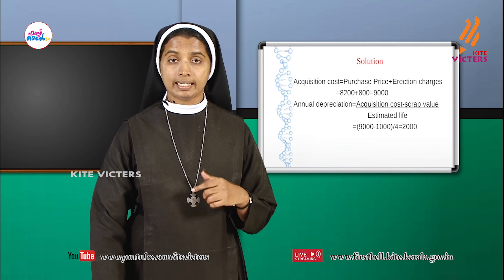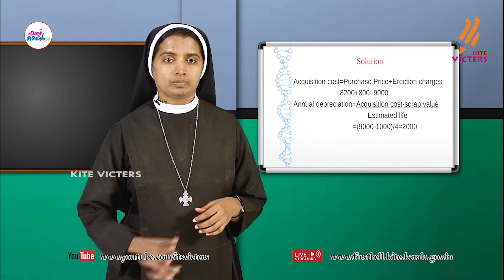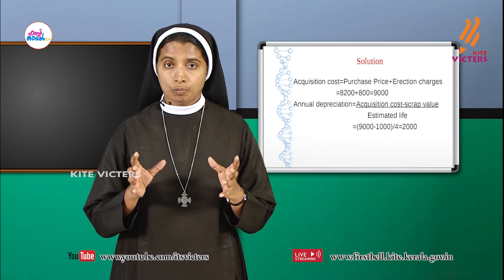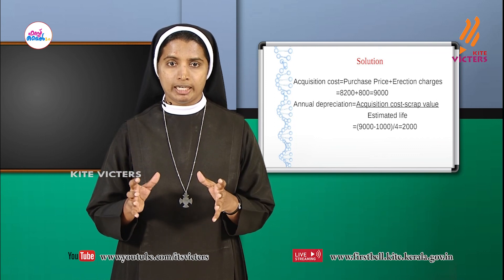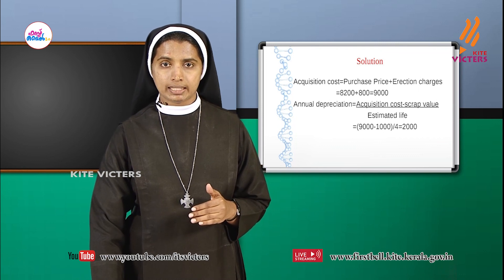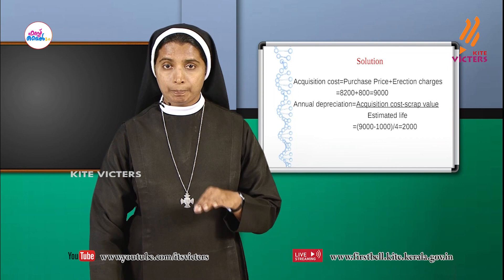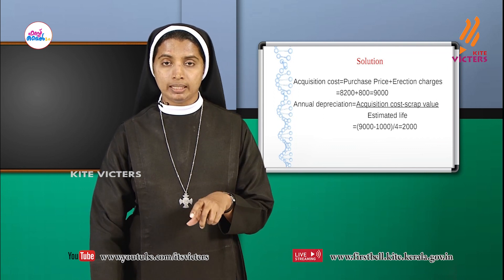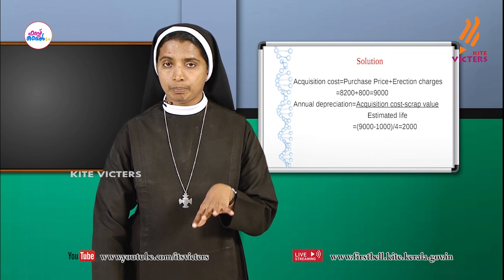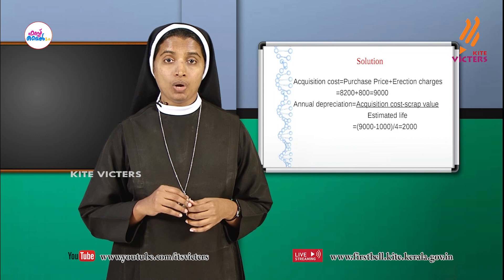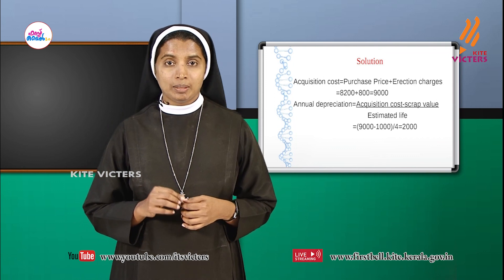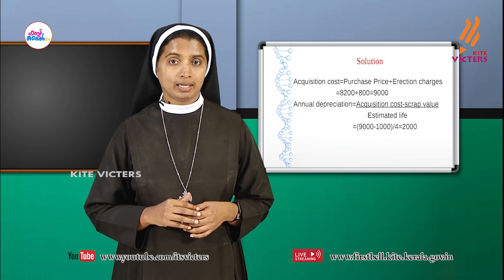They spent ₹800 as erection charges. So acquisition cost equals purchase price plus erection charges = ₹8,200 + ₹800 = ₹9,000. Annual depreciation = (acquisition cost − scrap value) ÷ estimated life = (9,000 − 1,000) ÷ 4 = ₹2,000.